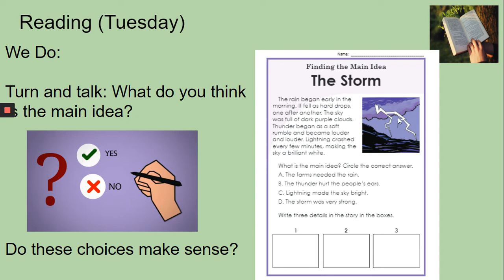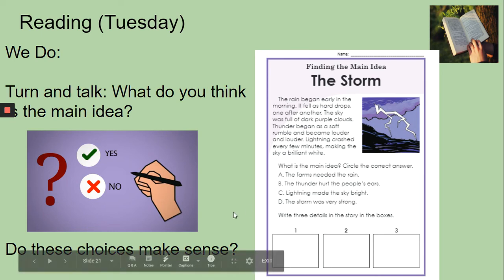So, as you can see, there was a storm. How do you know? What do you think this story is mostly about? What is the main idea? I'm going to read some choices to you, and I want you to think as I'm reading which ones you can eliminate and which answers make the most sense. Remember, the main idea is what the story is mostly about. Letter A: the farms needed the rain. Letter B: the thunder hurt the people's ears. Letter C: lightning made the sky bright. Letter D: the storm was very strong.